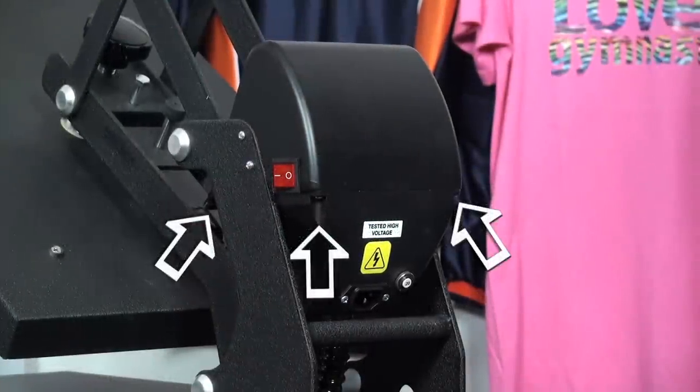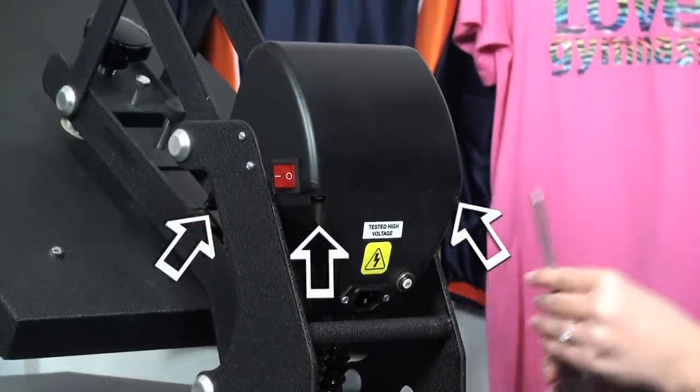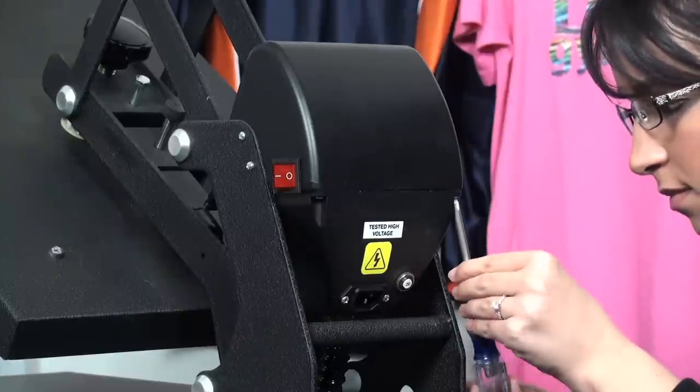To begin, remove the four screws from the underside of the housing cover. Three are indicated here and the fourth is on the far side.